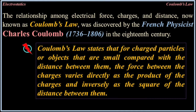The relationship among electric force, charges, and distance, now known as Coulomb's Law, was discovered by the French physicist Charles Coulomb (1736–1806) in the 18th century. Coulomb's Law states that for charged particles or objects that are small compared with the distance between them, the force between the charges varies directly as the product of the charges and inversely as the square of the distance between them. So instead of masses M1 and M2, you have charges Q1 and Q2, and instead of G, you have a different proportionality constant.